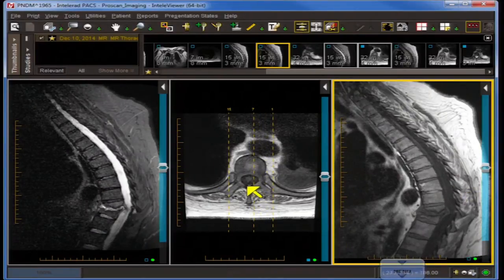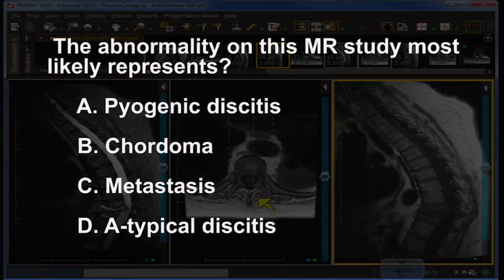Here is your axial T1 weighted image. Now the first question: The abnormality on the MR study most likely represents — A, pyogenic discitis; B, chordoma; C, metastasis; or D, atypical discitis.